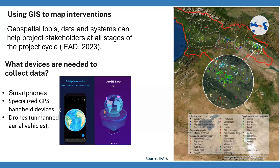What devices are needed to collect data? Recently, we can use smartphones and tablets to collect data. These devices are easy to use and relatively efficient for collection of GPS coordinates, basic analysis, and viewing of maps. They are widespread, low-cost, portable, and have multiple uses including communication, photography, and video recording. They readily lend themselves to geo-referencing project sites, but depending on the device may not be very accurate. An advantage is that people in rural areas can access a smartphone.